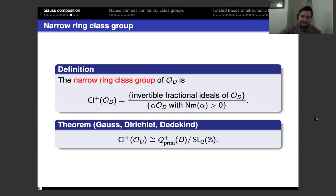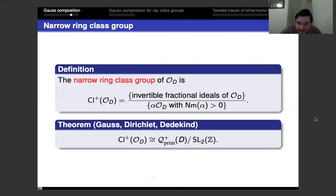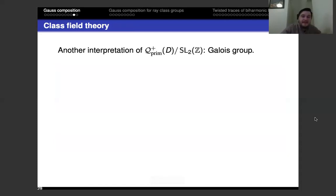The theorem is that this narrow ring class group is the same as the group described by Gauss composition. I've put Dirichlet's and Dedekind's names there for their role in reformulating Gauss composition and defining ideals. Now we move into class field theory. Another interpretation of the class group — and therefore of the quadratic form version — is as a Galois group.